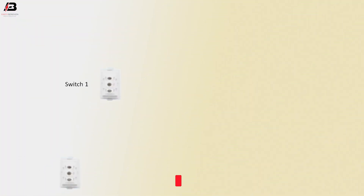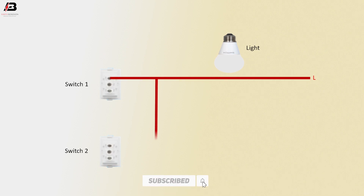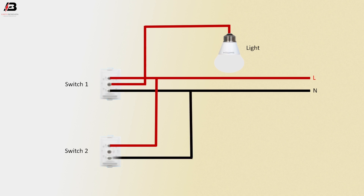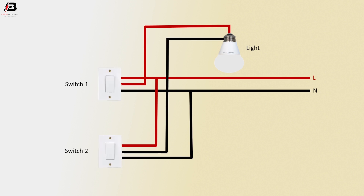Let's start. Switch one and switch two: face connection to switch one and switch two L1 terminal. Face connection outgoing from switch one common terminal to light. Neutral connection to switch one and switch two L2 terminal. Neutral connection outgoing from switch two common terminal to light.